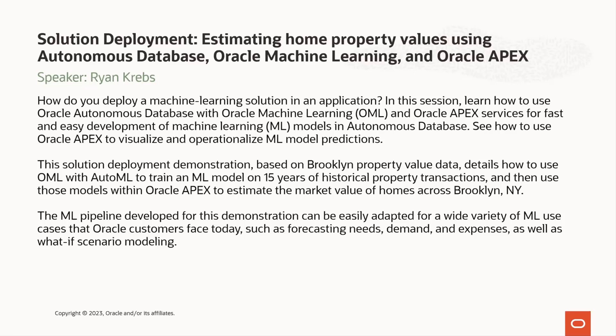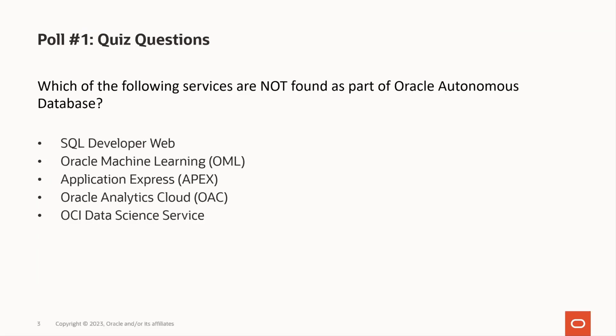Our solution deployment scenario revolves around a Brooklyn Property Value dataset, detailing how to use OML with automated machine learning, or AutoML, to train a machine learning model on 15 years of historical property transactions, and then use those models with APEX to estimate the market value of homes across Brooklyn, New York. The machine learning pipeline developed for this demonstration can be easily adapted for many use cases, such as demand and expense forecasting, as well as what-if scenarios. Before we begin, let's have a quick quiz.